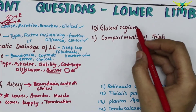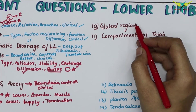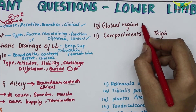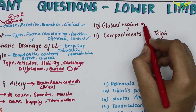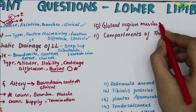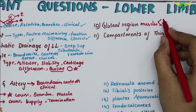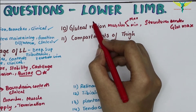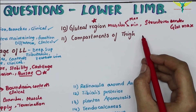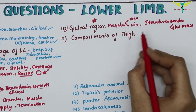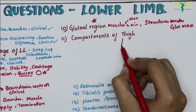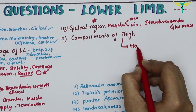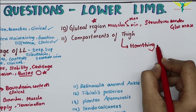The next important essay question is the gluteal region. They will ask about the muscles — mainly gluteus maximus and minimus — and the structures under the gluteus maximus. The compartments of the thigh are also important.